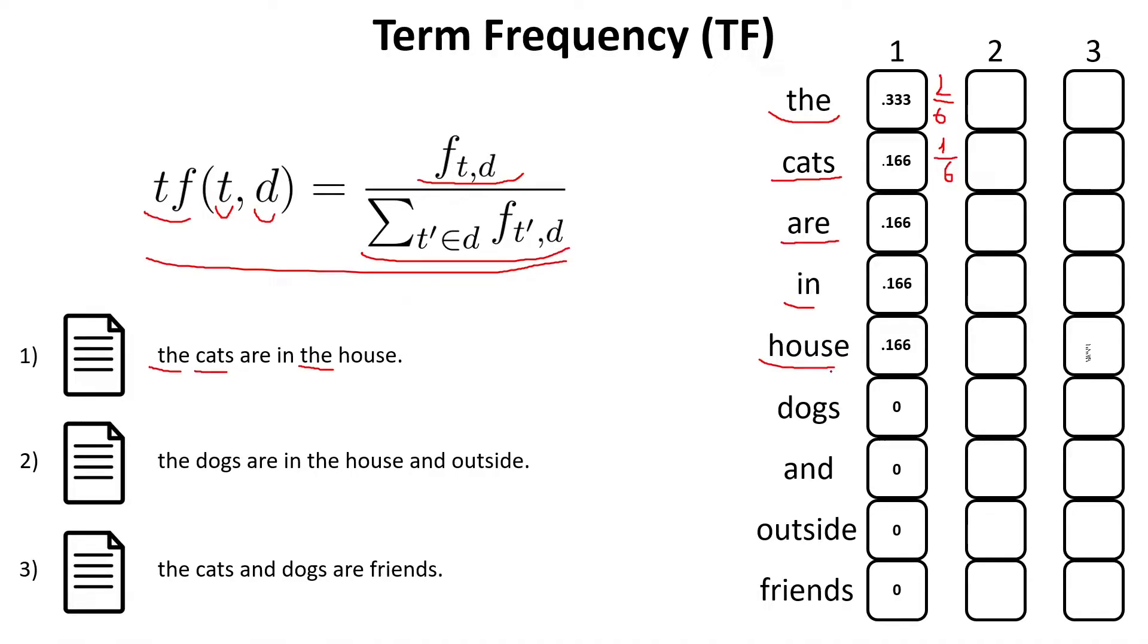But we also compute the values for the words that are found in other documents, like dogs, outside, and so on. But to do these words, we assign the value 0 over here because these words are not found in our document. And if you look at the formula, then the numerator would be equal to 0. So, automatically, this value will be also equal to 0. And we can apply the same formula to obtain the vector for the second document and again, for the third document.